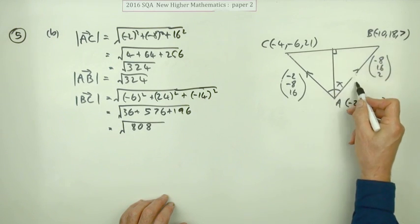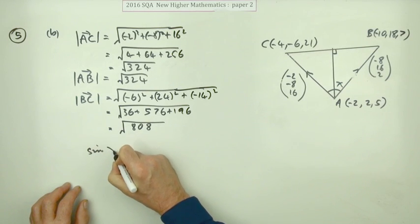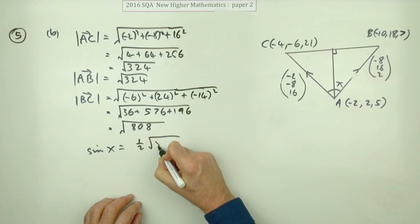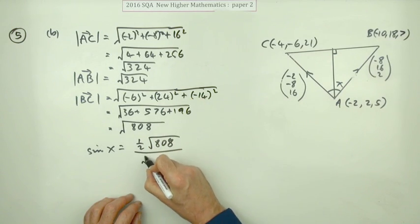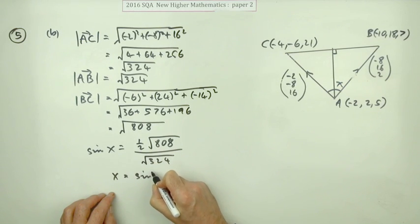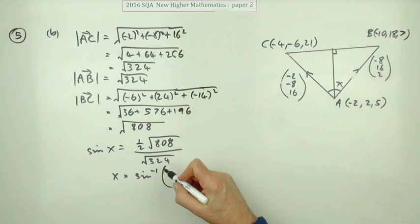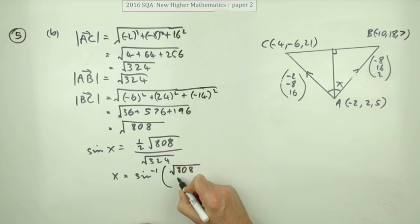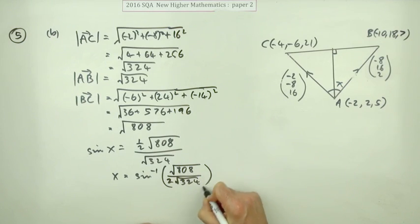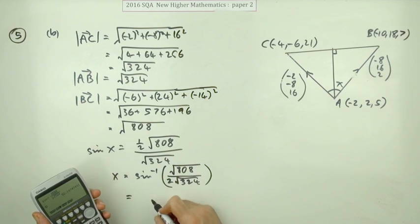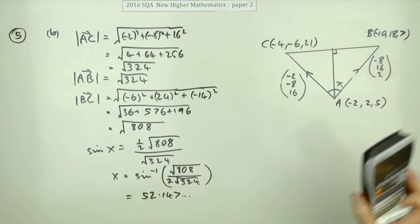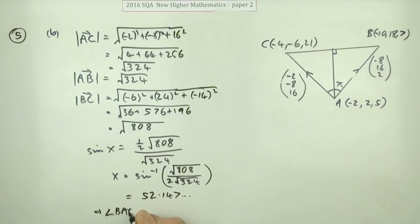And then in this triangle, you've got, in this case, it's the sine of x you'd be using here. You know that the sine of x is the opposite, which is half of this. So it's a half of root 808 divided by this length, which was root 324. So x would be inverse sine of, you could just leave it on the roots. Or if you knew, happened to know that that was going to be 18, then that 2 at the bottom would make it into 36. But no, they'll just leave it that way. Root 808 over 2 root 324. And then press those buttons. And you get 52.147 and so on, which means the angle BAC will be 2 times that, which is 104.3.